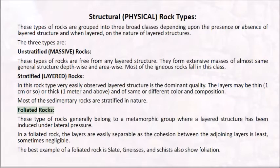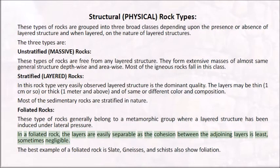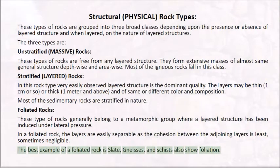Foliated Rocks generally belong to a metamorphic group where a layered structure has been induced under lateral pressure. In a foliated rock, the layers are easily separable as the cohesion between the adjoining layers is least, sometimes negligible. The best example of a foliated rock is slate; gneisses and schists also show foliation.